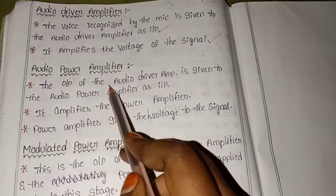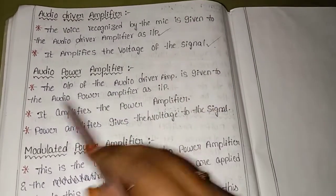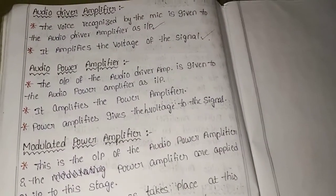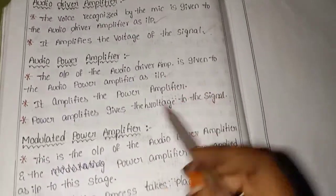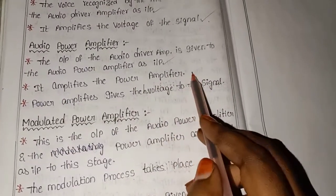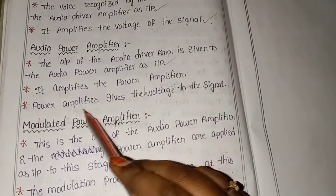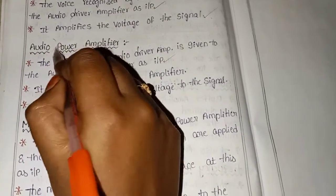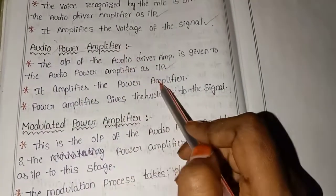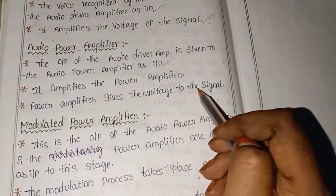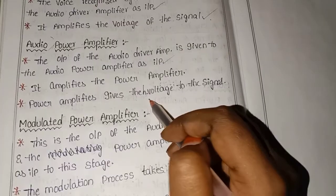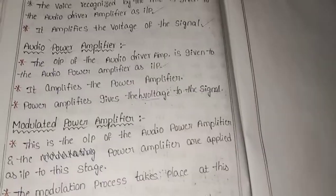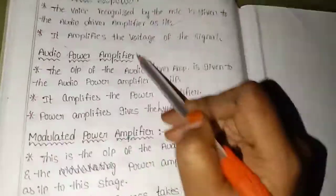Next is the audio power amplifier. The output of the audio driver amplifier is given to the audio power amplifier as input. It amplifies the power of the signal and gives a high voltage output to the signal.